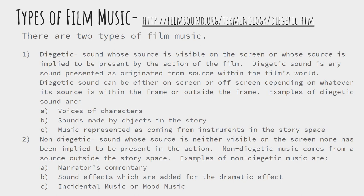Examples of diegetic sound are the voices of characters, sounds made by objects in the story, and music represented as coming from instruments in the story space. So if my character is playing a guitar, that music is going to be diegetic. If my characters go to a dance, any music that's played by the DJ at the dance is going to be diegetic because my characters can hear it.